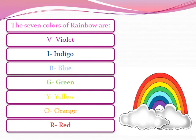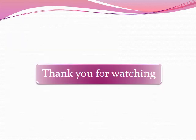The seven colors of the rainbow are violet, indigo, blue, green, yellow, orange, and red. I hope you have understood the topic and the difference between weather and season. Thank you so much for watching.